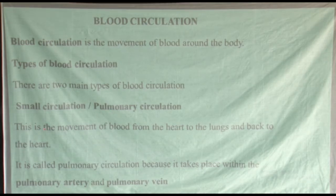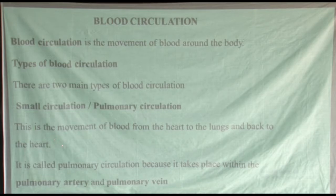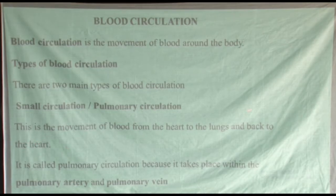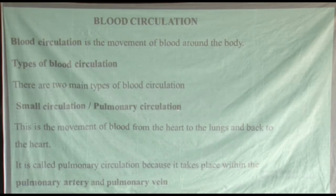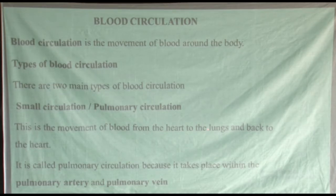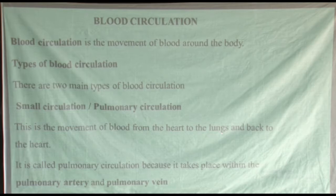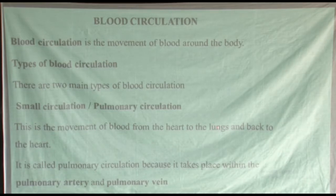Small circulation refers to the movement of blood from the heart to the lungs and back to the heart. Blood moves from the heart to the lungs because this blood has no oxygen — it has to go to the lungs to get oxygen, to be oxygenated, and then drop carbon dioxide. When blood gets to the lungs, the hemoglobin — the red pigment in the blood — combines with oxygen to form a new substance called oxyhemoglobin.